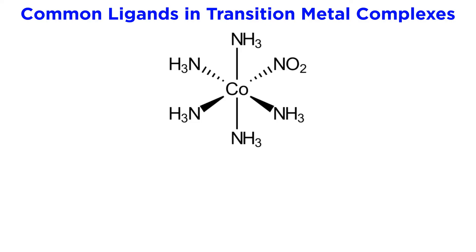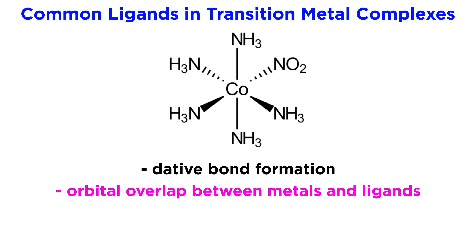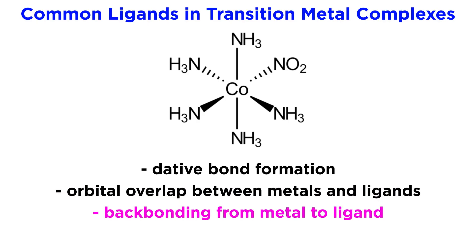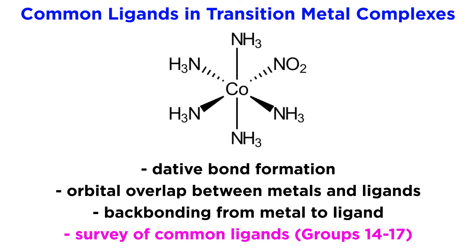So that covers the general concept of bonding in transition metal complexes. We have learned about dative bonds and how they differ from the covalent bonds we are used to, the types of orbital overlap that occur between metals and ligands, including the new concept of backbonding, as well as a brief survey of simple and common ligands based on elements from groups 14 to 17. Now let's move forward and check out some trickier ligands.